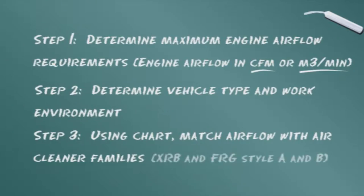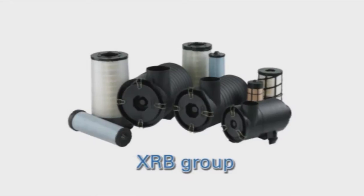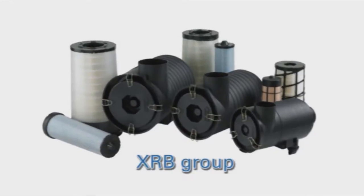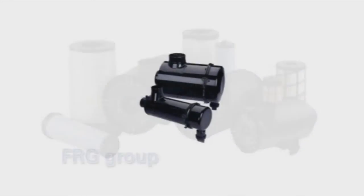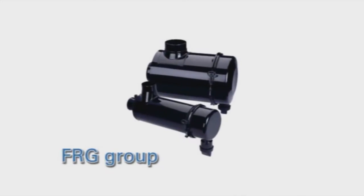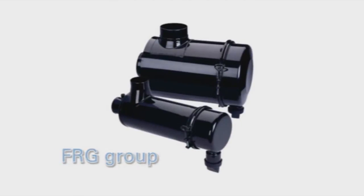The chart shows they are the XRB, the FRG style A, and the FRG style B. Air cleaner dimensions, locations of the inlet and outlet, and mounting configurations are appropriately considered at this step.